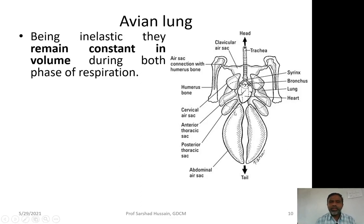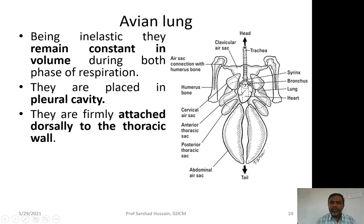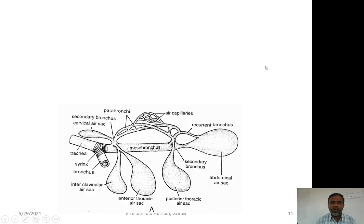Because avian lungs are inelastic, they remain constant in volume during respiration. They are placed in the pleural cavity and firmly attached to the dorsal thoracic wall. Air sacs often remain connected to the pneumatic cavity inside the bones.